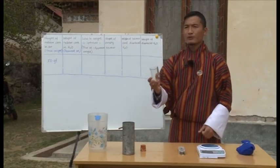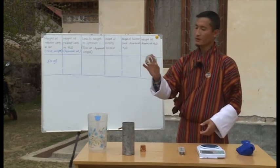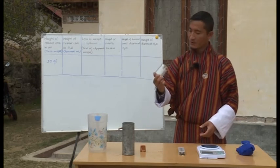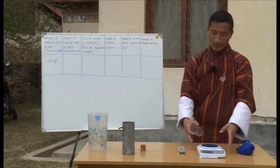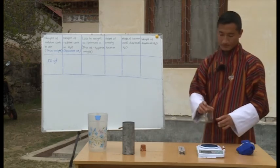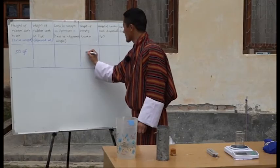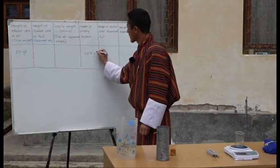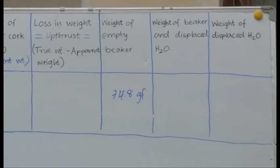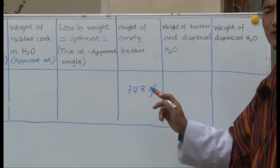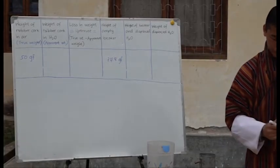Next, we take the weight of the empty beaker. Before that, we make sure the beaker is totally empty with not even a single drop of water. We place it on the digital weighing machine and the reading is 74.8 gram-force. Note that we add 'F' to indicate it is a force, not merely a mass.